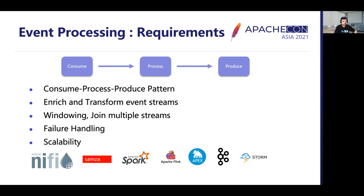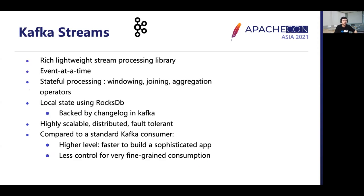In this talk I'm going to use Kafka Streams, which is a rich lightweight event stream processing library. In Kafka Streams each event is processed one at a time. It supports both simple stateless processing as well as complex stateful operations involving time-based windowing, joins, or aggregations. For stateful operations, state data is locally stored in a RocksDB database. For recovery, each change to this local state is also propagated to a changelog topic in Kafka. In case of failure or topology restart, local state is restored from that changelog topic, which is also periodically compacted to reduce overall size.